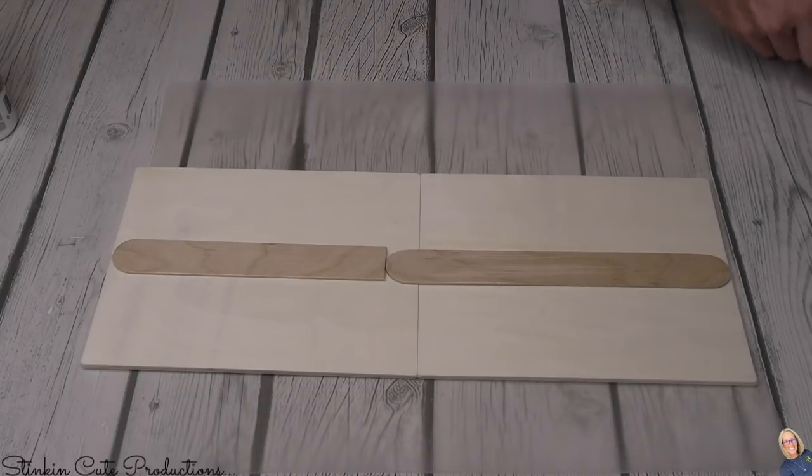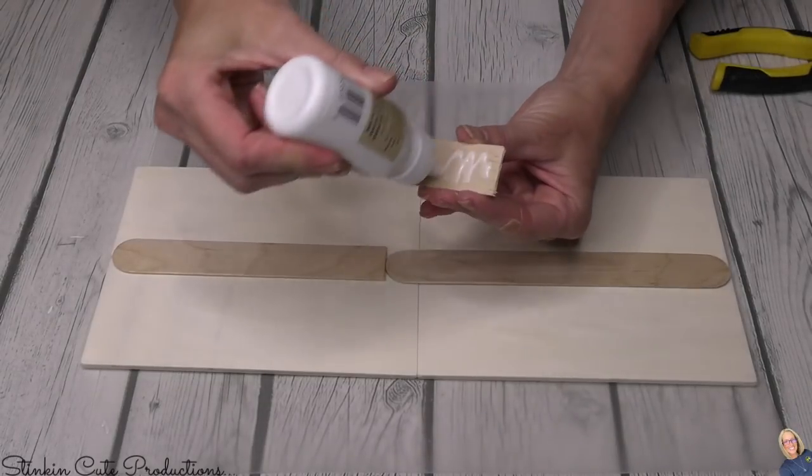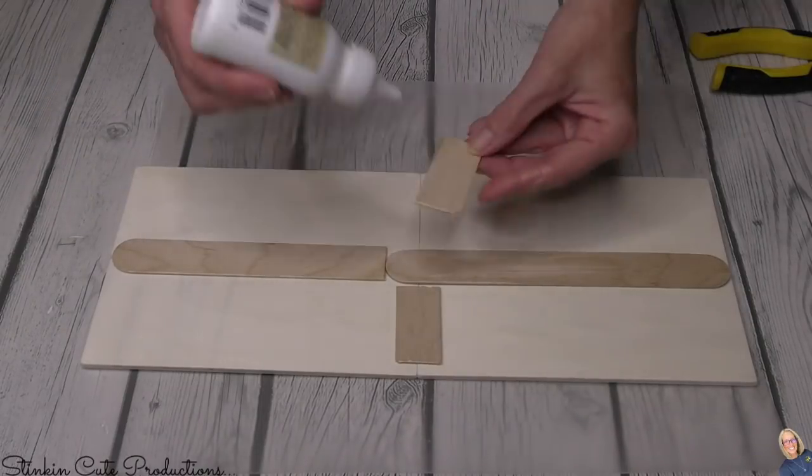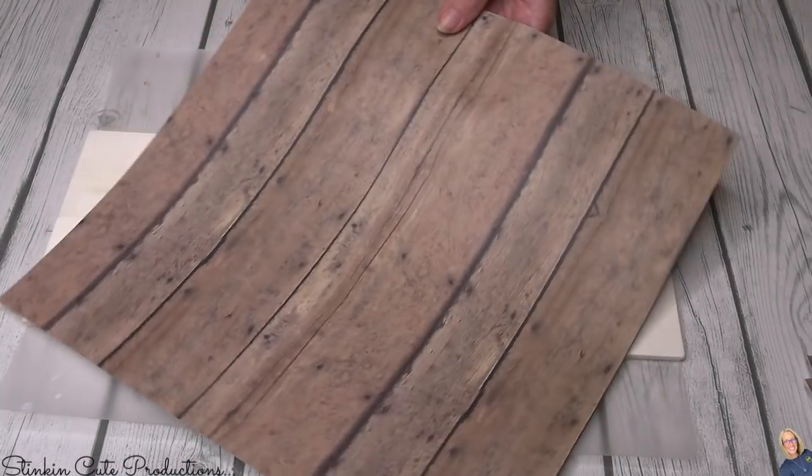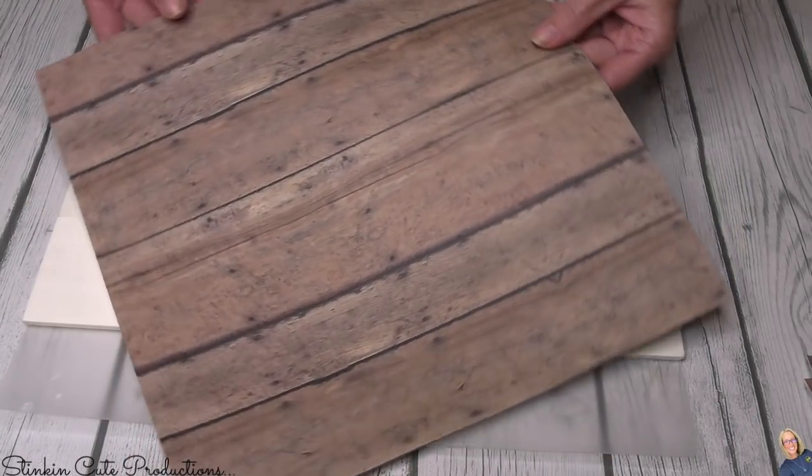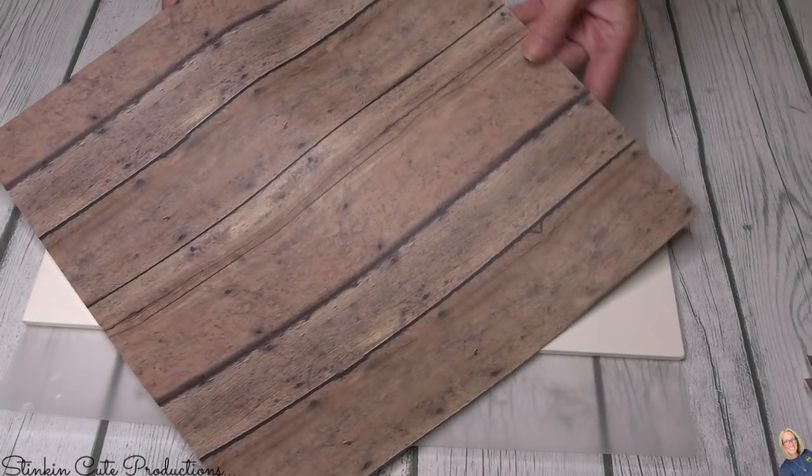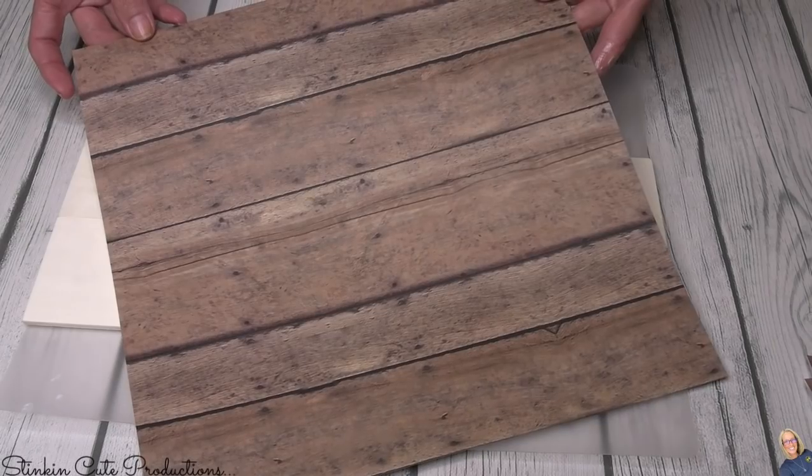Now, if you can find a plaque at Dollar Tree that's a good size, I'd say go with that, and then you're going to save yourself using some of the planks. I didn't have any plaques on hand, and so when that happens, I just dig into my stash and see what I have, and I make it work, and that's what we're doing here. I headed on over to Hobby Lobby to their open stock scrapbooking paper, and I picked up a couple sheets of this wood paper. Loving it.